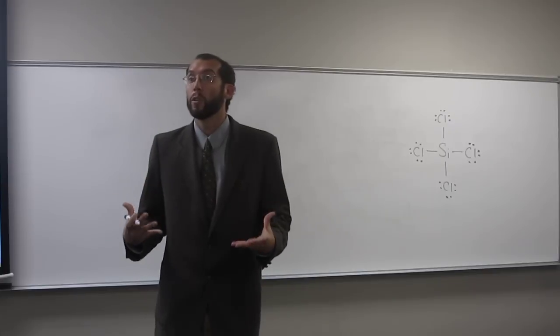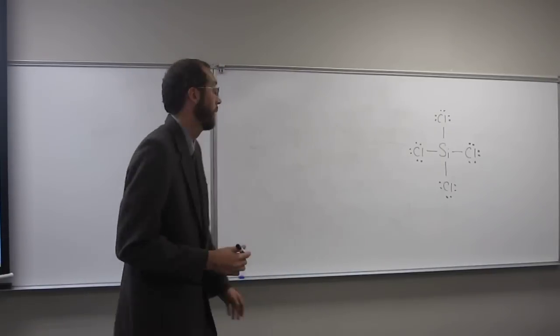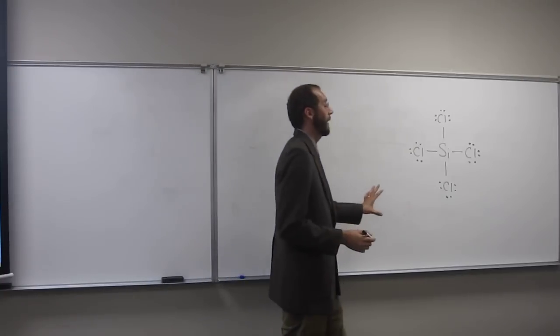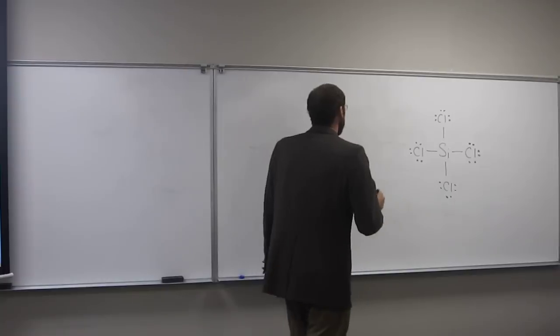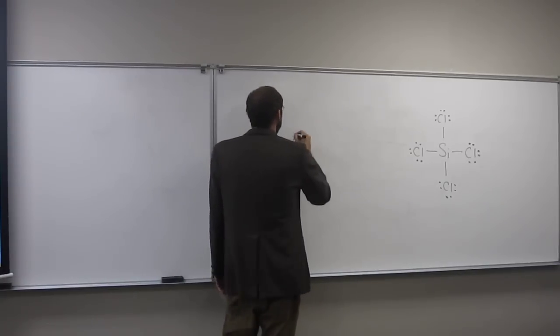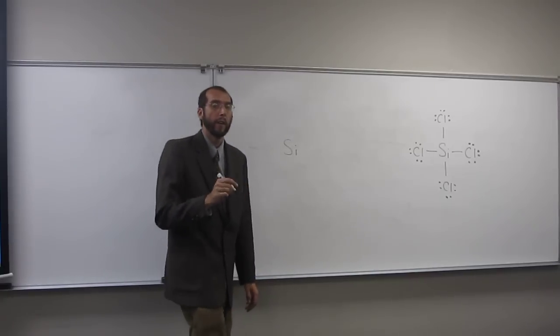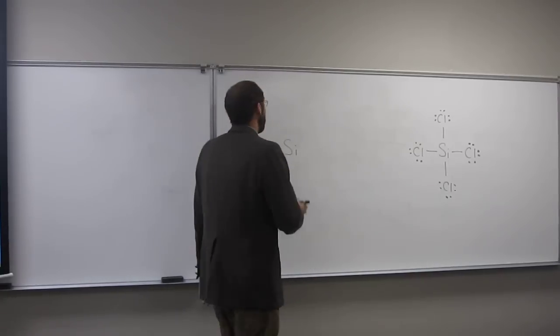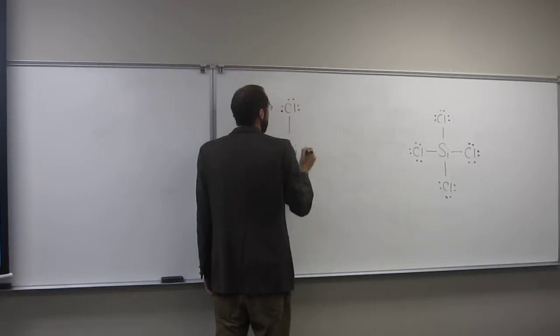But, these aren't two-dimensional objects. They're three-dimensional objects. So, in fact, they can get further away from each other than 90 degrees. So, the furthest four things can get away from each other is 109.5 degrees. So, that's a number you're going to have to memorize. You haven't memorized it already.